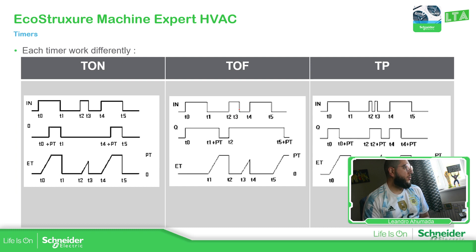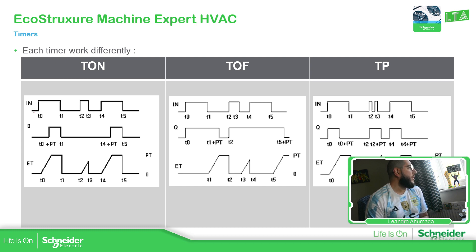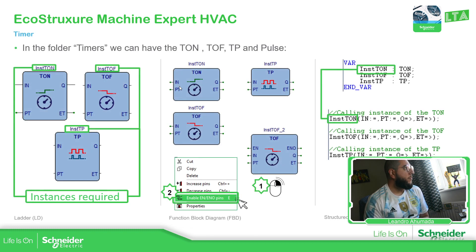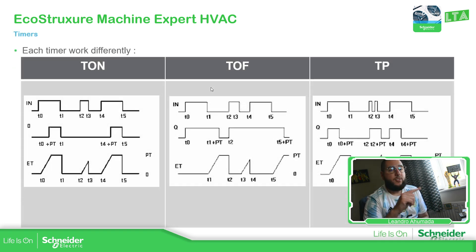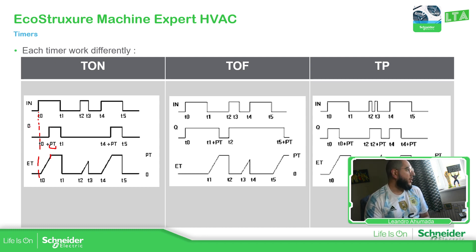So what these three timers do — the T-ON, retardo la conexión in Spanish. Basically you have the input, PT, and Q. The input is the signal you have. As soon as the signal goes true, the actual time starts increasing until it reaches the preset value PT. As soon as it reaches the PT, the output Q will be active, and it stays active as long as the input remains true. As soon as the input goes to false, it disconnects.